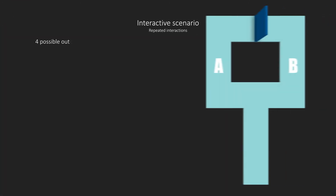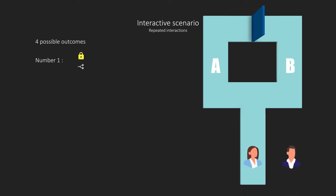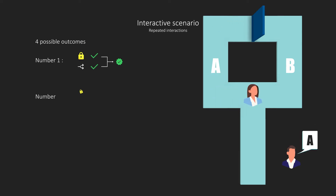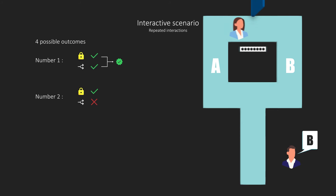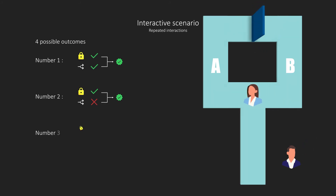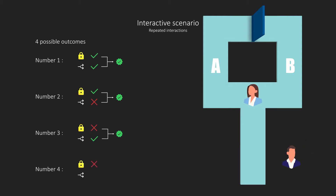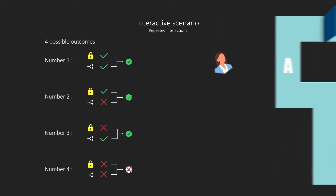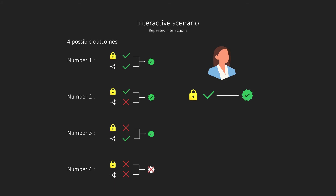There are then four possibilities. Number 1: if Peggy knows the secret word and enters on the correct side, she can walk back and complete the challenge. Number 2: if Peggy knows the secret word and she enters on the wrong side, she can go through the door and complete the challenge. Number 3: if Peggy does not know the secret word and she enters on the correct side, she can still complete the challenge. Number 4: if Peggy does not know the secret word and she enters on the wrong side, she cannot complete the challenge.